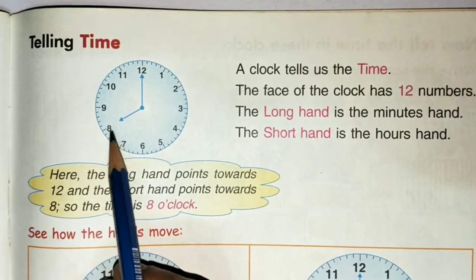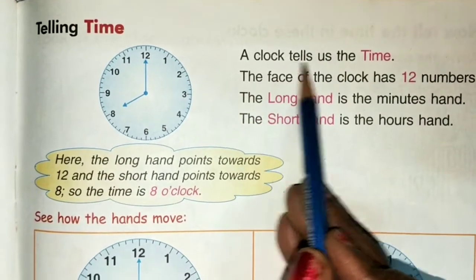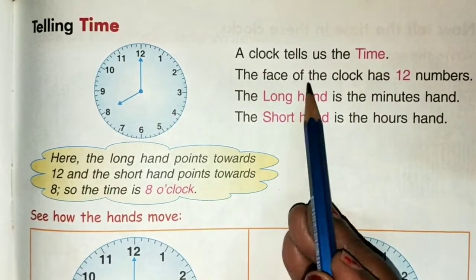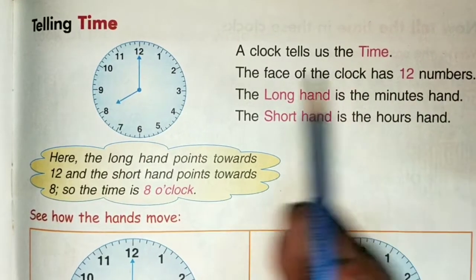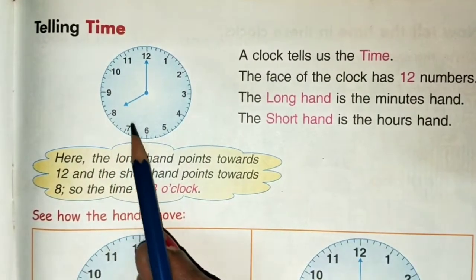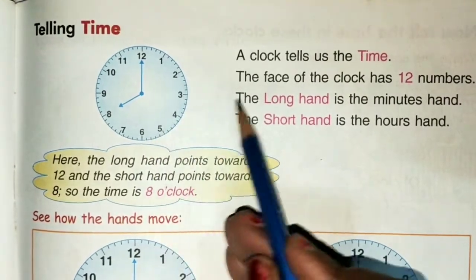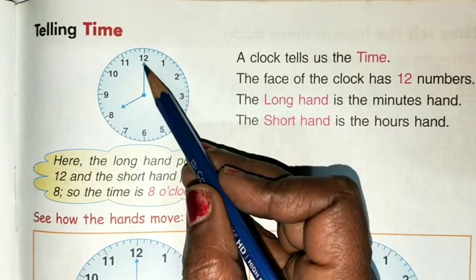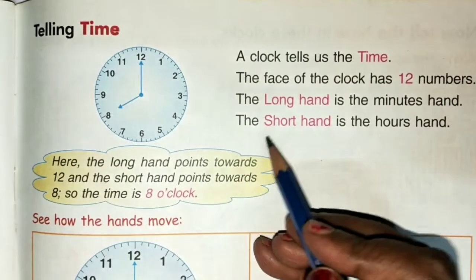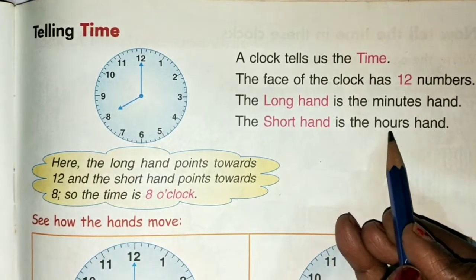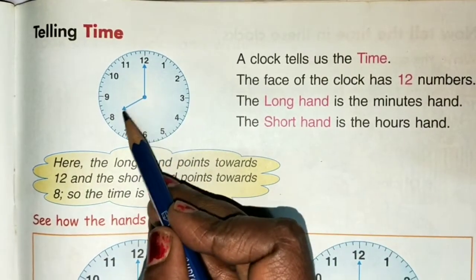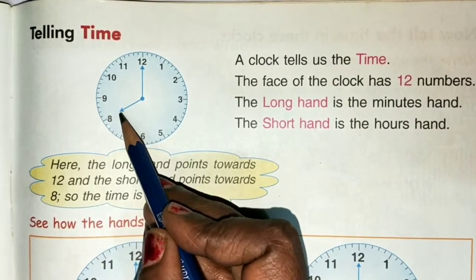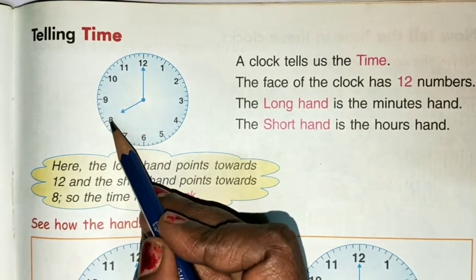Now we start the lesson. A clock tells us the time. The face of the clock has twelve numbers. The long hand is the minutes hand. The short hand is the hours hand. The hours hand tells us the hour. In this clock it is 8 o'clock.